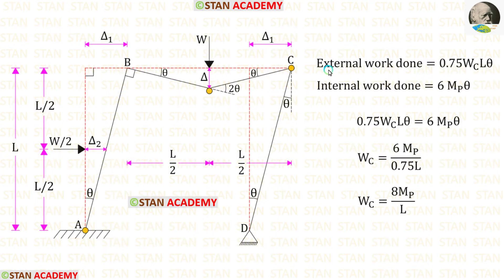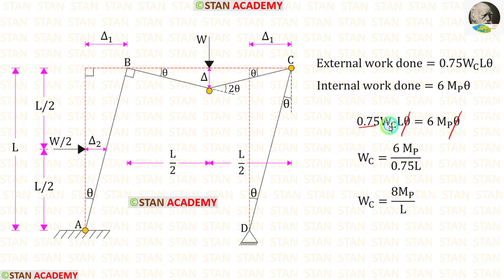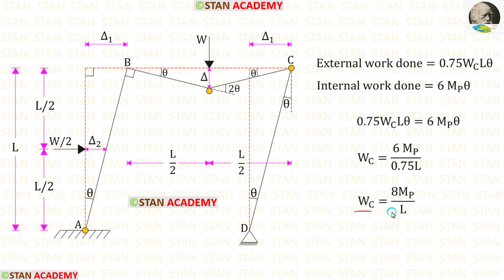Now let us equate the external work done and the internal work done. We eliminate θ and bring 0.75L to the other side as denominator. 6 / 0.75 = 8. So in the combined mechanism, the collapse load Wc = 8MP/L.